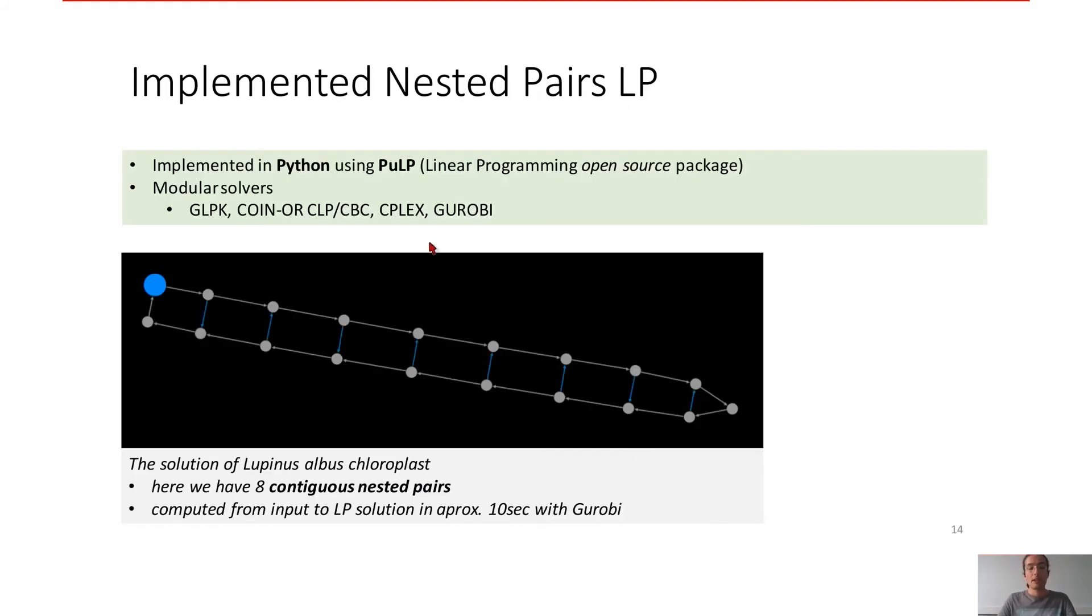We implemented nested pairs linear program thanks to Python using the open source package PuLP. Then PuLP translates the problem implemented in Python to any solver here, and you can use any of these solvers. Some are open source, others are commercial. For these solutions, we used a commercial very famous solver, LP solver, GUROBI. And here it was computed from input to LP solution in approximately 10 seconds, so very fast.